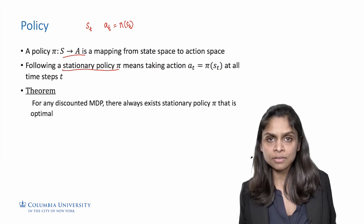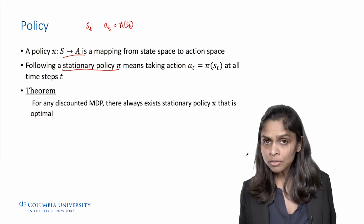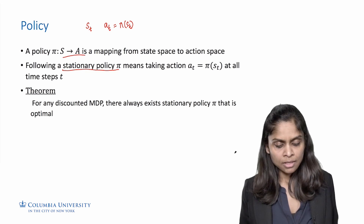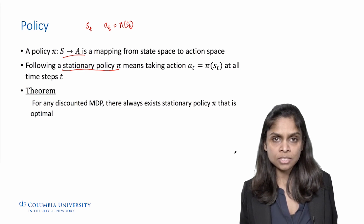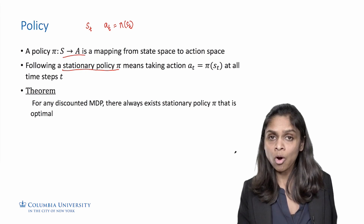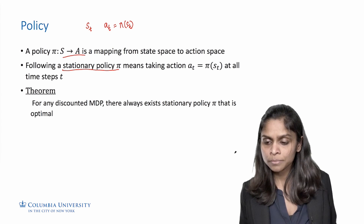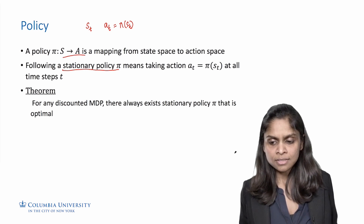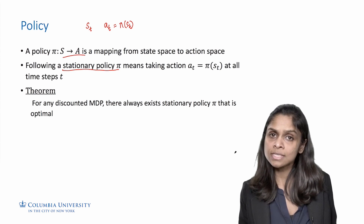A theorem that comes in handy when dealing with MDPs is that, due to the Markovian property, a discounted MDP always has a stationary optimal policy. That is, there always exists a fixed policy such that taking the actions specified by that policy at all time steps would achieve the maximum discounted total reward. The agent does not need to change policies with time. This insight reduces the question of finding the best sequential decision-making strategy to simply finding the best stationary policy.